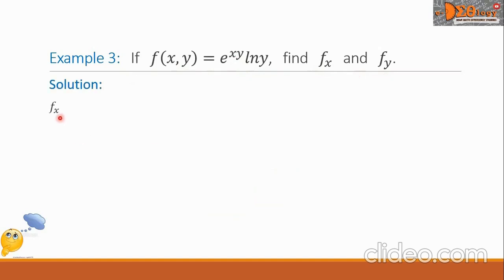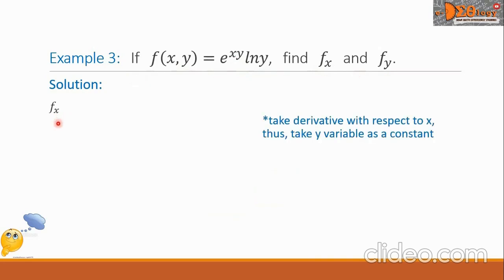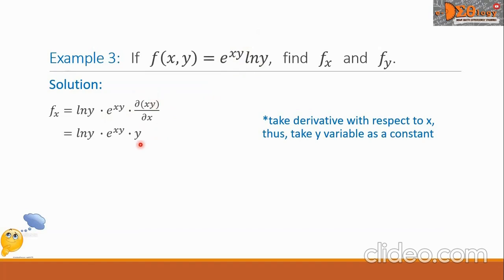Let's begin with f sub x, the partial derivative of f with respect to x. We take the derivative with respect to x, treating y as a constant. The derivative is ln y — a constant — times e raised to xy, multiplied by the partial derivative of the exponent xy with respect to x. The derivative of xy with respect to x is simply y. So f sub x equals y times e raised to xy times ln y.